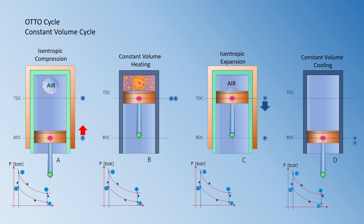During isentropic compression, isentropic means there is no heat flow. We assume the cylinder is thermally insulated — represented by a brown layer — so heat is prevented from flowing in or out of the system. On the PV diagram, the system undergoes a change in state from point 1 to point 2 in an isentropic process.